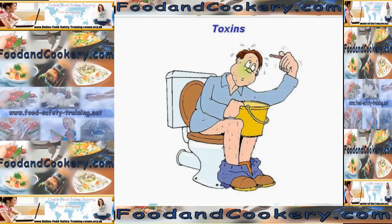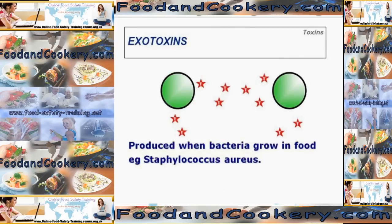Now, I've briefly mentioned toxins in the last couple of slides, so let's have a look at toxins in more detail. Toxins are poisons produced by some bacteria, not all bacteria, and there are two types. There are exotoxins — these are produced when bacteria grow in food, for example Staphylococcus aureus. So if we cough or sneeze over food, the bacteria will start to multiply, and as they multiply they give off a waste material. Much like humans give off faeces and urine as waste material, the toxins are the waste material of the bacteria, and these are poisonous to us.